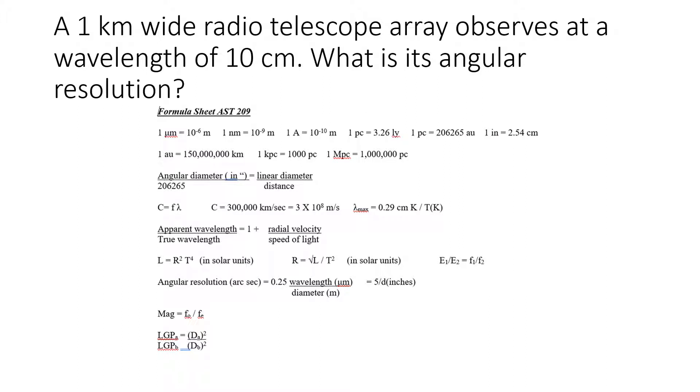So here's a typical problem. A 1 kilometer wide radio telescope array observes at a wavelength of 10 centimeters. What is its angular resolution? Well, since we're given that it is a radio telescope and it observes at radio wavelengths, we cannot use the simple 5 over D in inches.